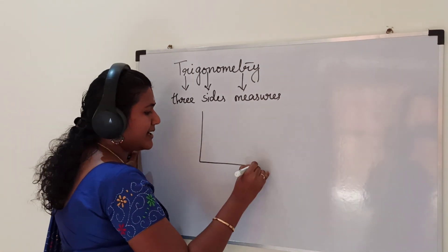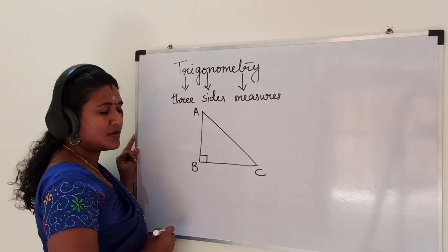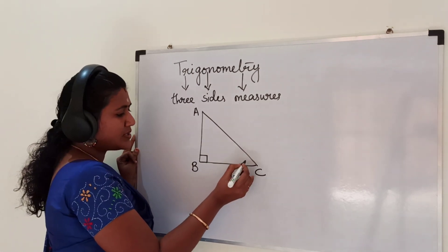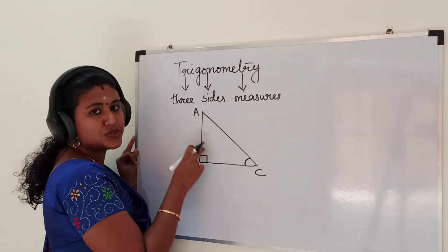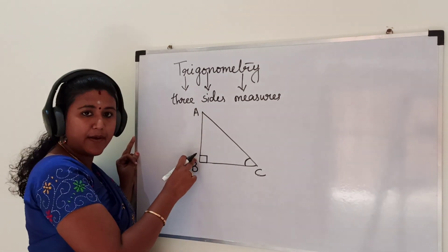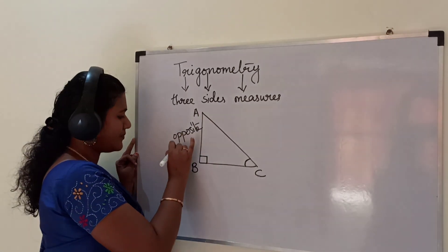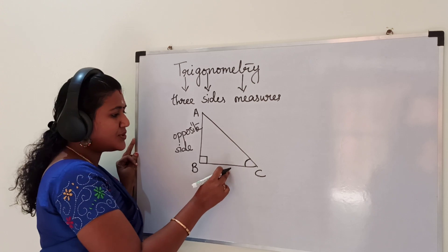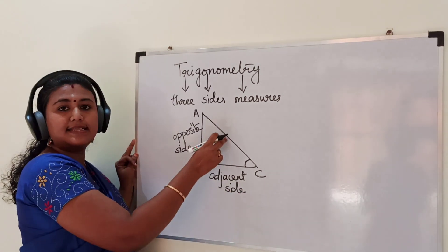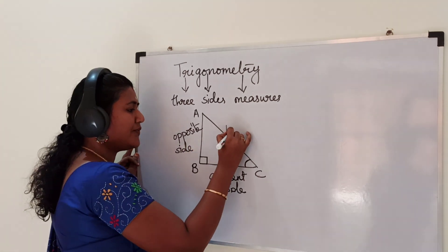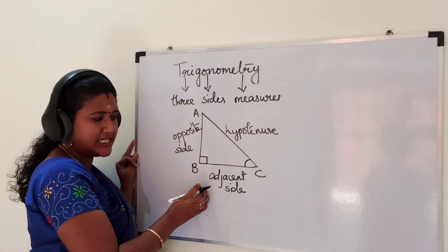So let us consider a right angle triangle ABC with angle B equal to 90 degrees. These two remaining angles will be acute angles. First we will consider the acute angle C. With respect to angle C, we can name the sides: side AB, which is opposite to angle C, is called the opposite side. Side BC is adjacent to this angle, so we call it the adjacent side. And side AC is opposite to 90 degrees, so we call it the hypotenuse.